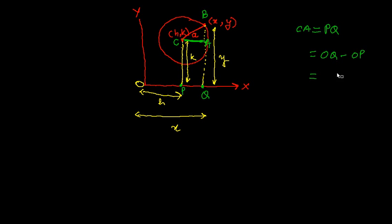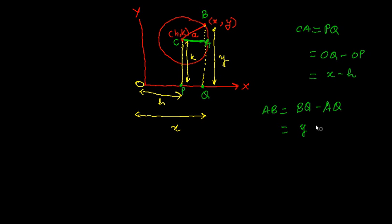So CA is x minus h. Now I would like to know what AB is. AB equals BQ minus AQ. BQ is y. AQ is the same as CP, because we have rectangle PQAC and opposite sides in a rectangle are equal. Therefore AQ equals CP, and CP is k. Therefore AB is y minus k.